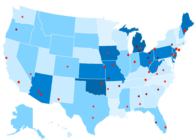Some DO graduates attend the same graduate medical education programs as their MD counterparts and then take MD specialty board exams, while other DO graduates enter osteopathic programs and take DO specialty board examinations. One notable difference between DO and MD training is that DO training adds 300 to 500 hours studying techniques for hands-on manipulation of the human musculoskeletal system, a system shared with chiropractic medicine.